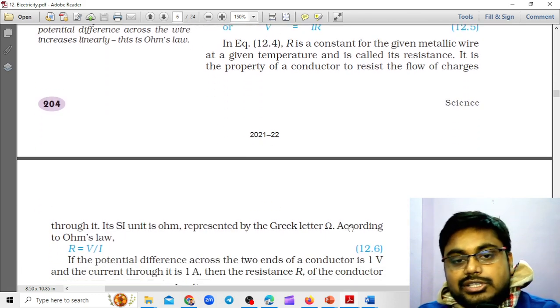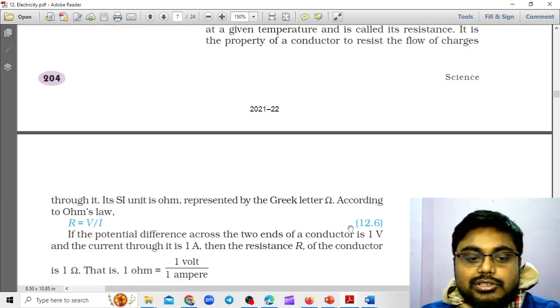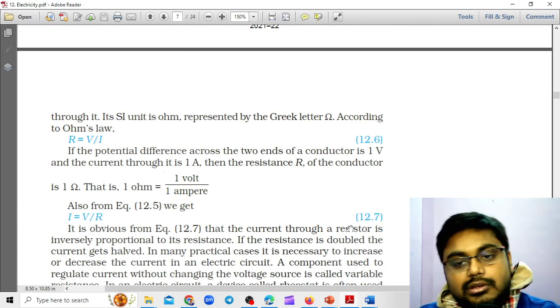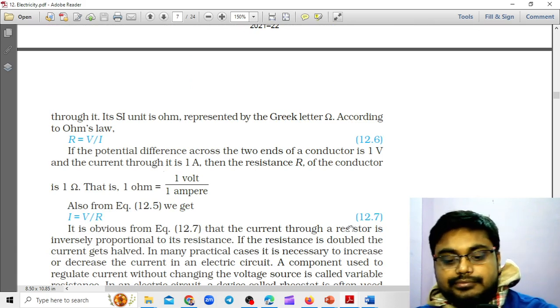Resistance is the property of a conductor to resist the flow of charges through it. Its SI unit is ohm, represented by the Greek letter omega. According to Ohm's law, R is equal to V by I.